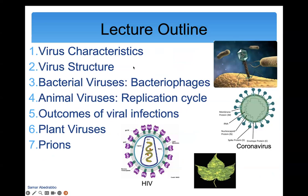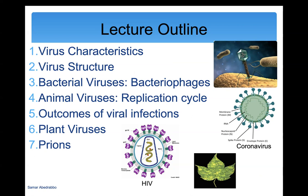In this lecture we're going to talk about characteristics of viruses and how they're not alive, the very simple structure of viruses, viruses that infect bacteria called bacteriophage, viruses that infect humans which I'll call animal viruses, the outcomes of viral infections like what acute and chronic mean, plant viruses, and finally prions, which are not viruses but are infectious agents.